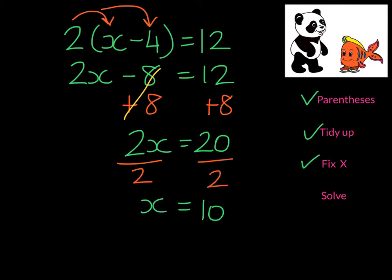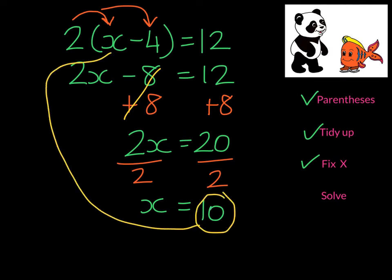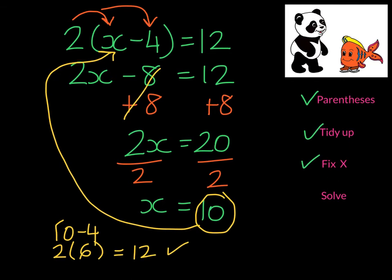We can now take our solution, substitute it into the original equation. 10 take away 4 gives me 6. If I multiply that by 2, do I get 12? Yes, so I've solved it correctly.